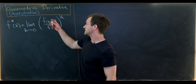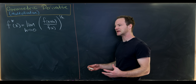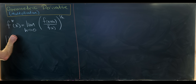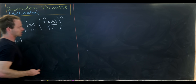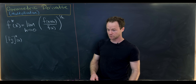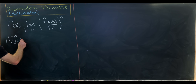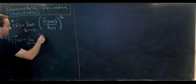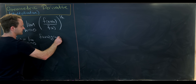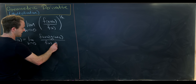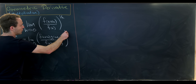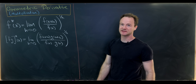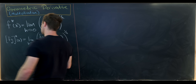We'll start by seeing why it's called the multiplicative derivative — that's because it interacts with the product of functions nicely. Let's calculate (f·g)*(x); in other words, we're going to find a product rule for this multiplicative derivative. By our definition this will be the limit as h goes to zero of f(x+h)·g(x+h) over f(x)·g(x), all to the 1/h power. We can split this product into two pieces and, using exponent rules, apply the exponent to each piece.